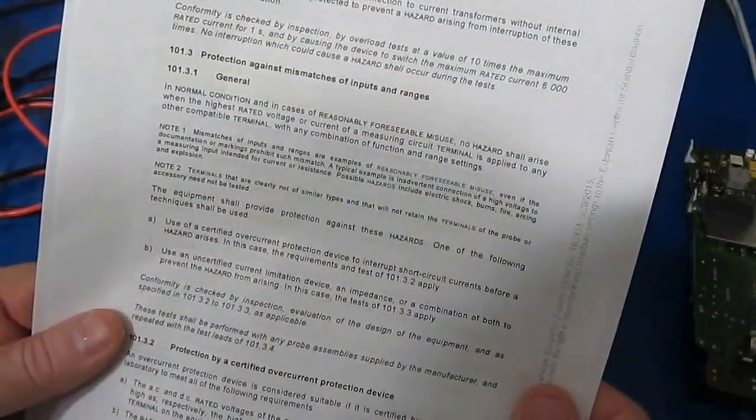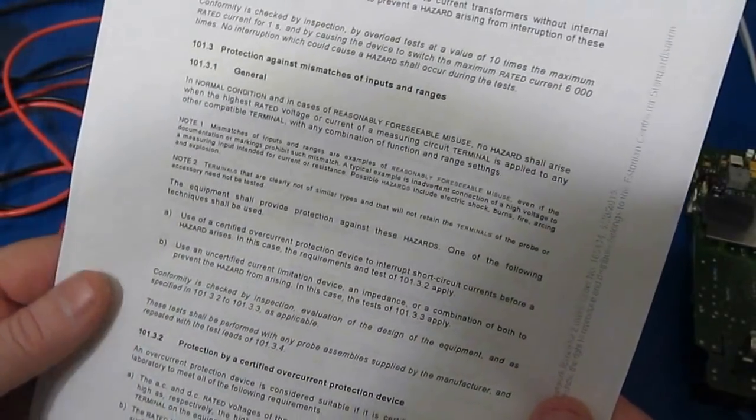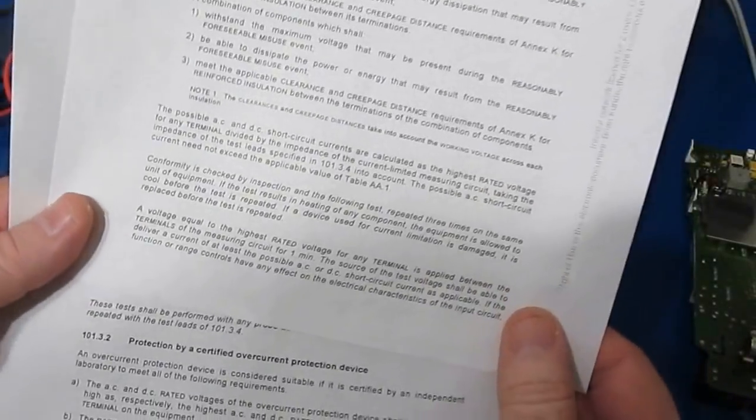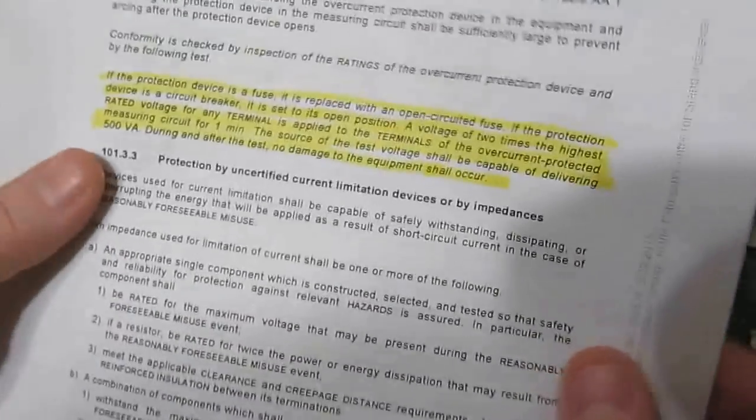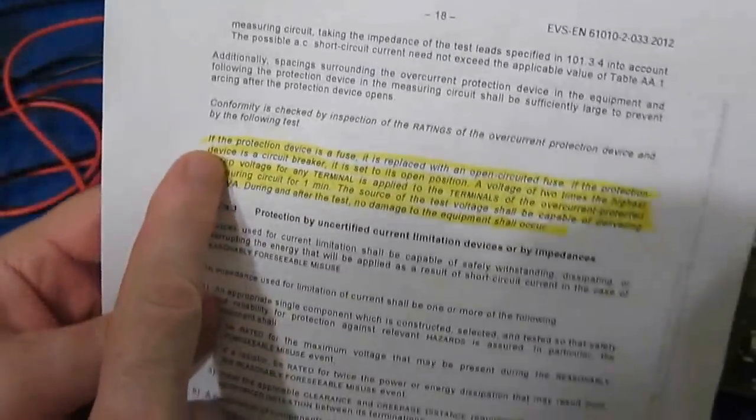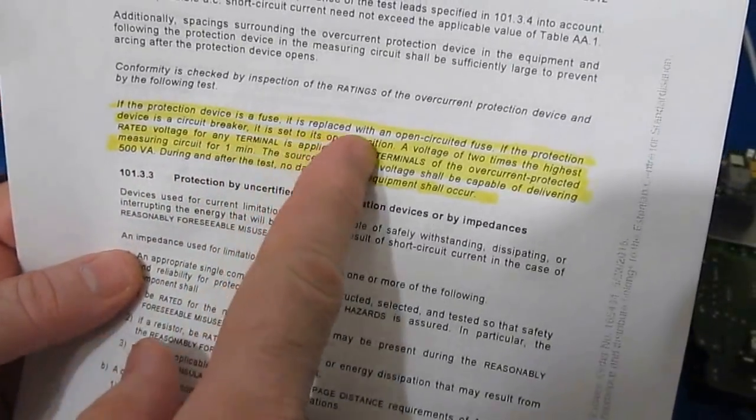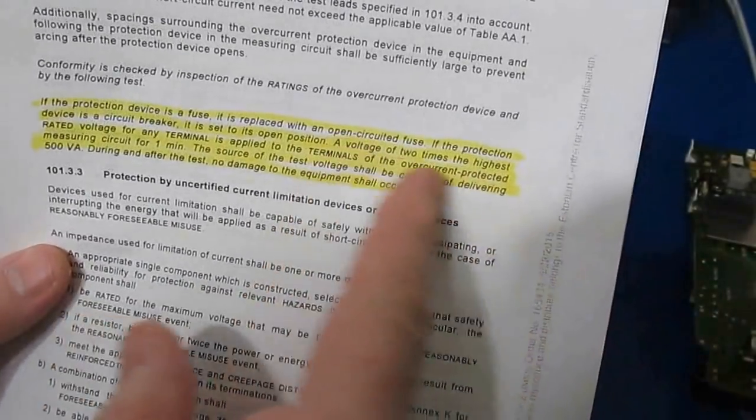This is out of IEC 61010-2-033, and this is section 101.3.2. Here we can see if the protection device is a fuse, it's replaced with an open circuited fuse.